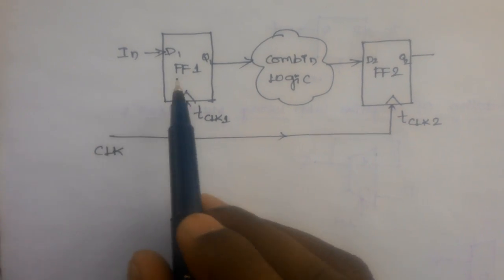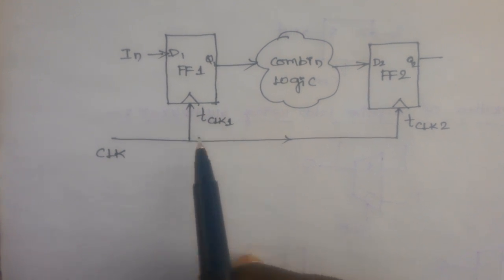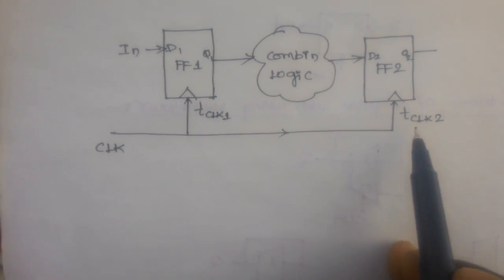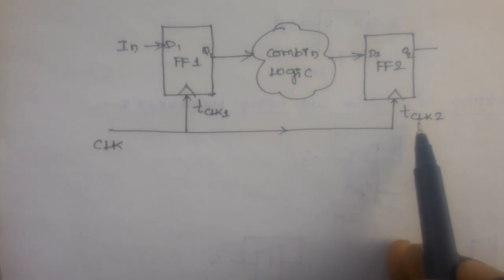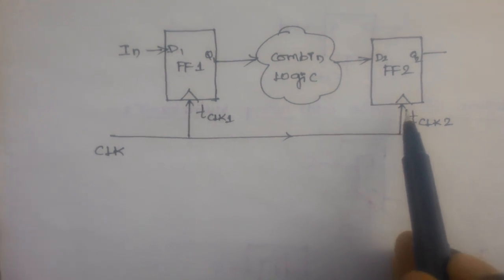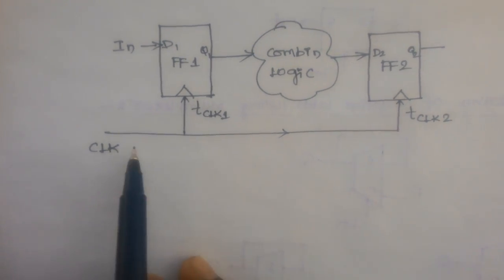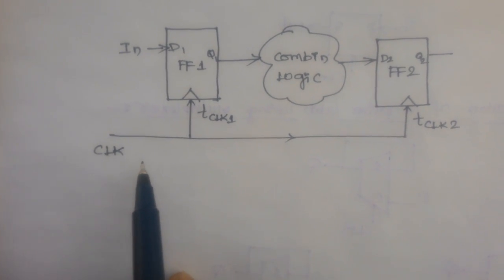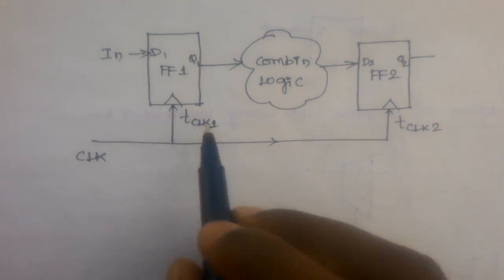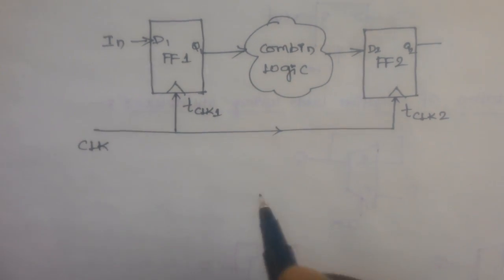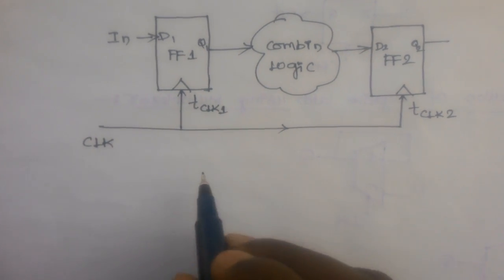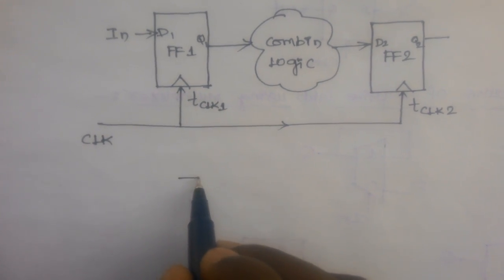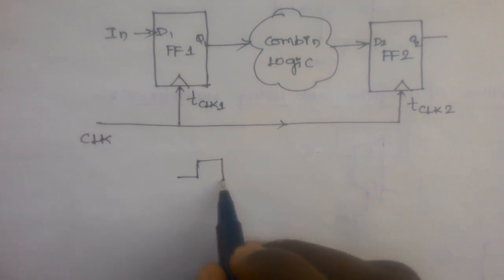I have two flip-flops: flip-flop 1 receiving clock 1 from the main clock, and flip-flop 2 also receiving clock 2 from the main clock itself. Now we will understand this with an example.